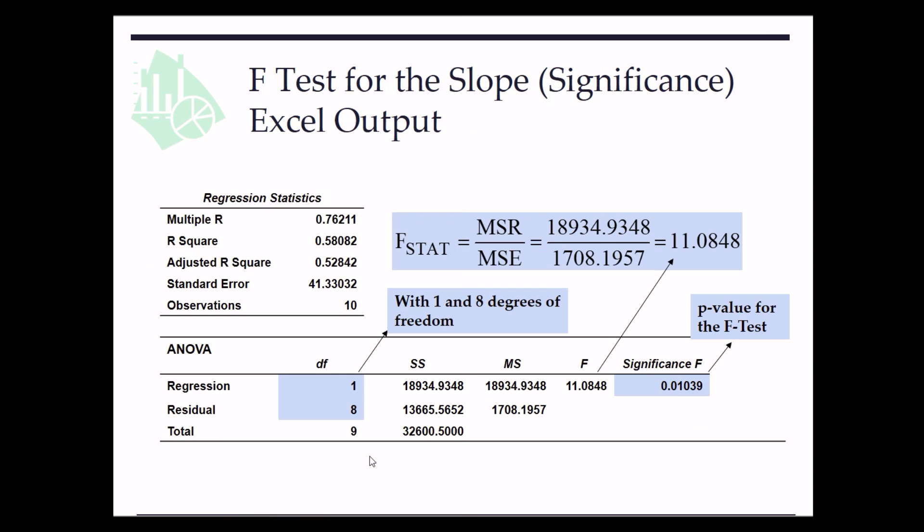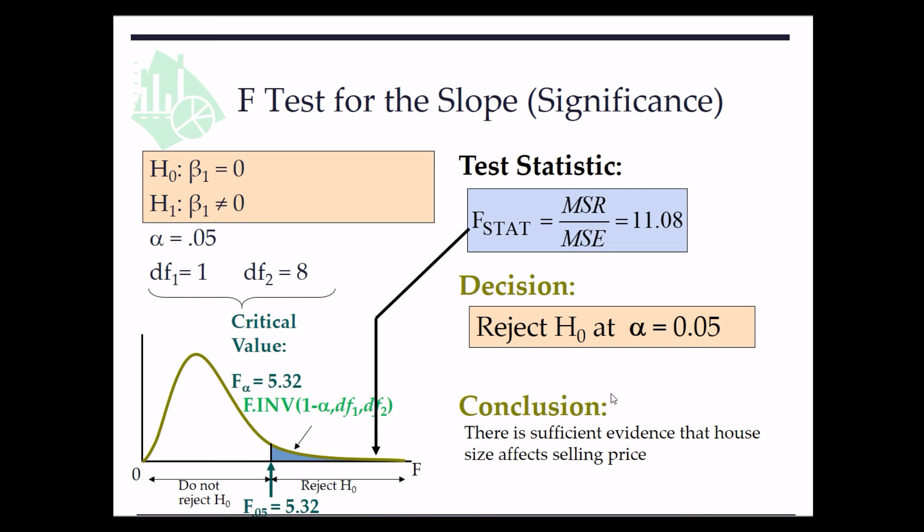And in the meanwhile, the p-value is less than alpha 0.05. So we reject H0 at significance level of 0.05. There is sufficient evidence that house size affects selling price at alpha equals 0.05.